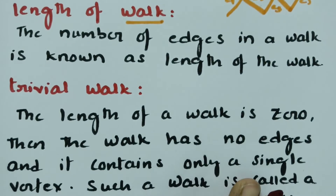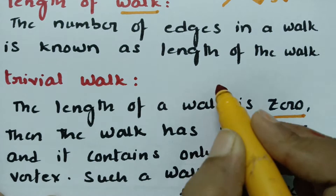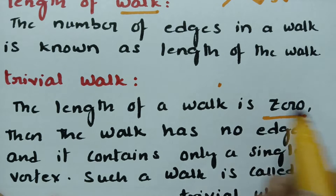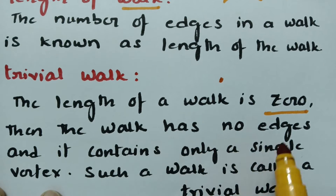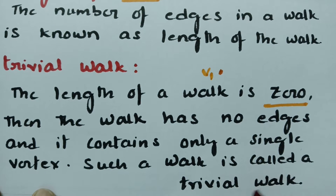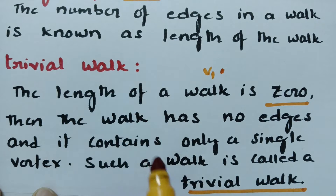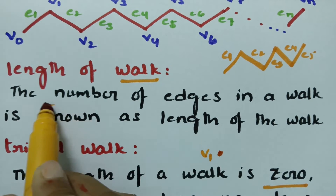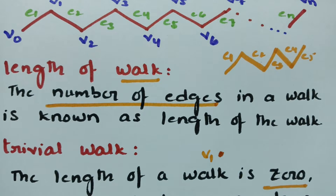What is a trivial walk? The length of the walk is 0, meaning there are no edges. If the edges are 0, only the vertex remains. The walk has no edges and contains only a single vertex — V0 or V1. Such a walk is called the trivial walk. The length of a walk is nothing but the number of edges.